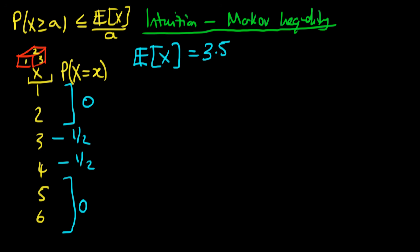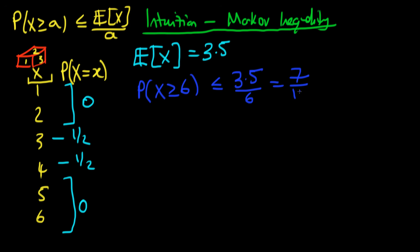Let's think about Markov's inequality as applied to the situation of our die. Let's think about the probability that X is greater than or equal to 6. We know from Markov's inequality that that's got to be less than or equal to the expectation of our die — which is 3.5 — divided by 6. And this is just equal to 7 over 12.